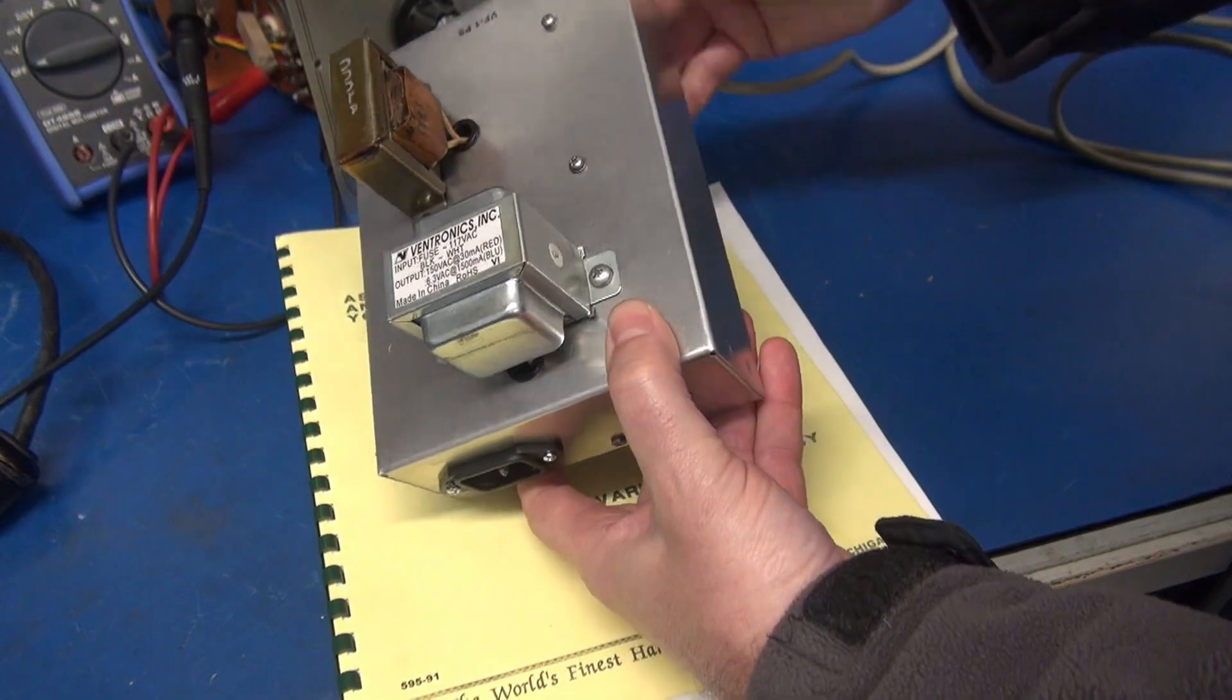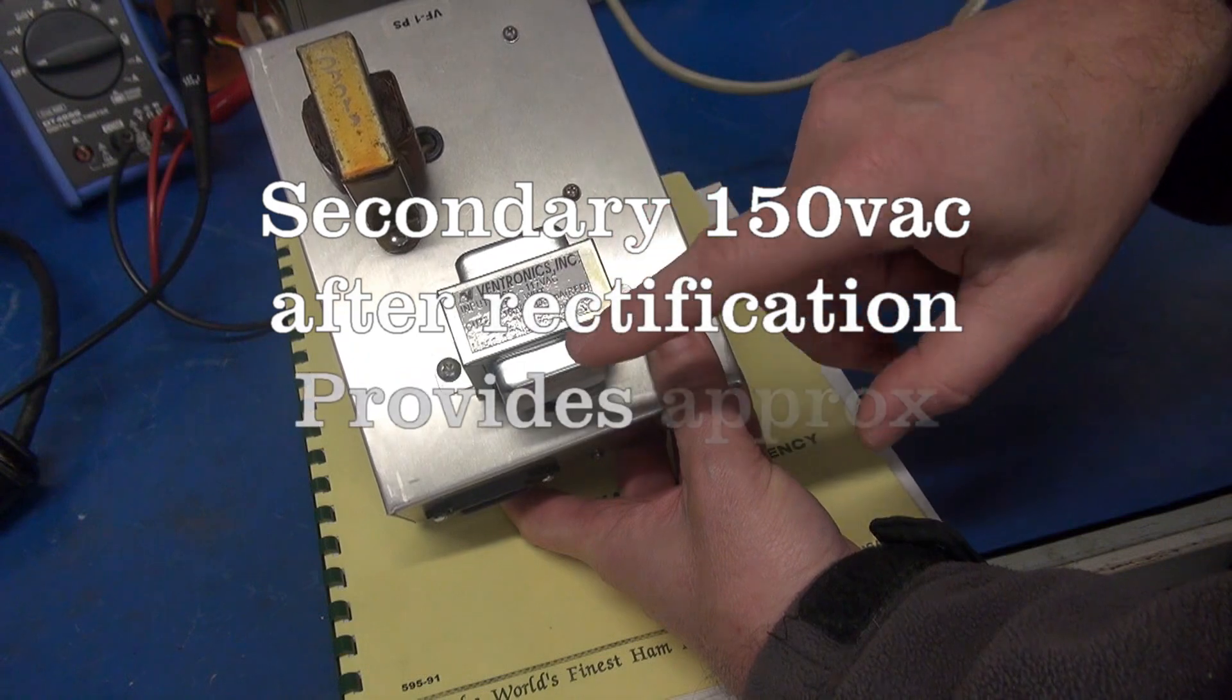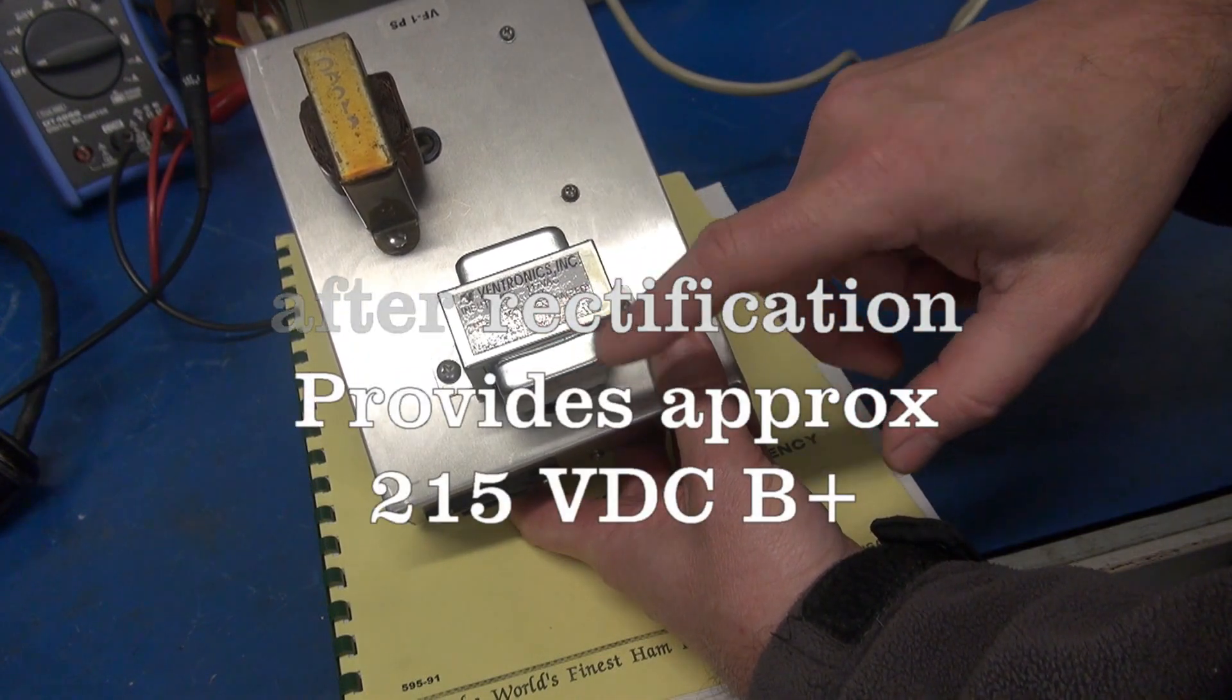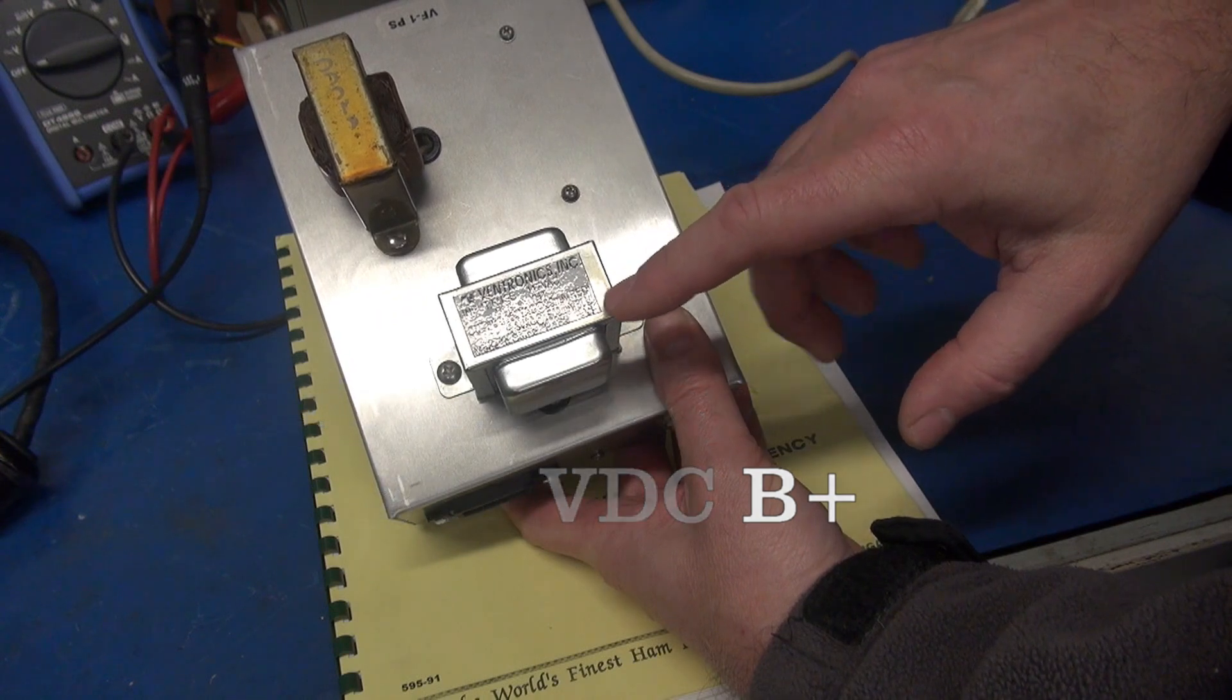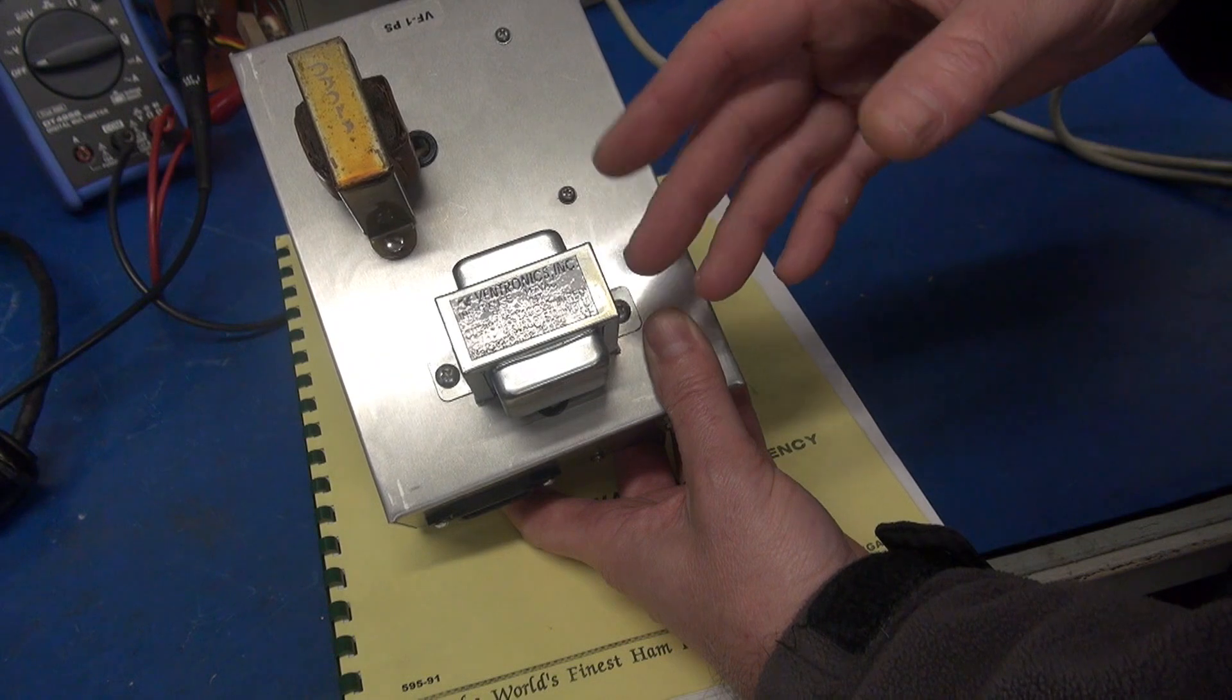One thing I need to quickly discuss is the power supply transformer. This one puts out about 150 volts AC on the secondary, and of course it has the 6.3 volts for the tube filament.